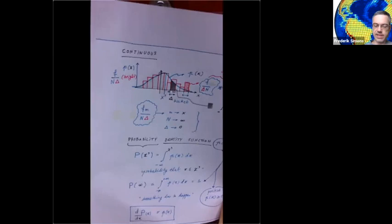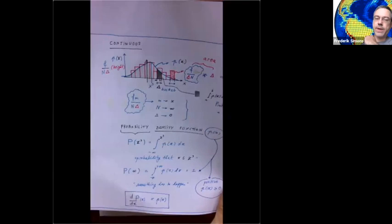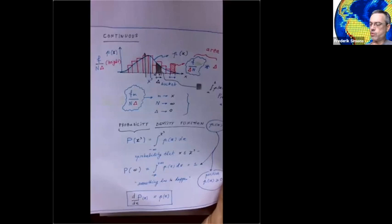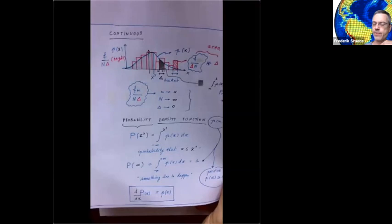We defined the distribution function first, which is always cumulative — a sum from the lowest value to wherever you evaluate it. Then we defined a density function, which when integrated over a set gives you a probability. The probability distribution function is a cumulative function, an integral over the density function. We showed that they are each other's integrals and derivatives respectively.